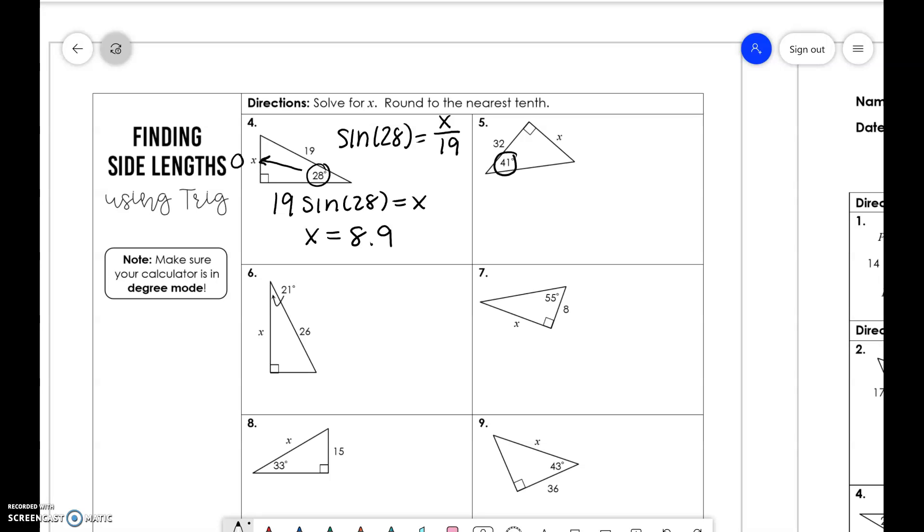If you look at number 5, this is opposite and this is adjacent. So opposite and adjacent uses tangent. So tangent of 41 is equal to x over 32. And x is equal to 27.8.